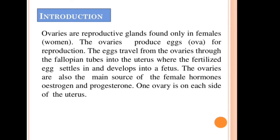The ovaries produce eggs, also called ova, for reproduction. The egg travels from the ovaries through the fallopian tube into the uterus, where the fertilized egg settles and develops into a fetus. So the egg is produced from the ovaries, travels through the fallopian tubes, goes into the uterus, and if fertilized, settles and grows into a fetus.